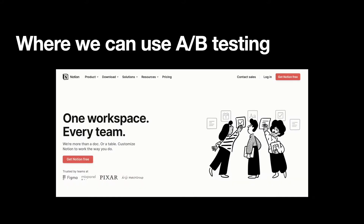A-B testing is applicable to almost all design decisions. For example, if you want to A-B test a landing page, we can test headlines, call-to-action buttons, or images — we can test everything that can be changed. Of course, the fact that we can test everything doesn't mean that we should. It's vital to focus on the design decisions that provide the maximum value for you and your users.